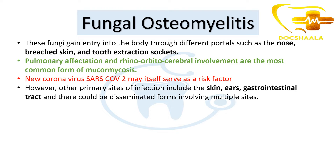How does this osteomyelitis occur? The fungal organisms — mucormycosis or aspergillosis — gain entry into the body through portals such as the nose, infected skin, or tooth extraction sockets. They then enter the maxilla or mandible in the maxillofacial region and start inhabiting that area. When that area is inhabited and the patient has any of the risk factors previously mentioned, there are chances of developing fungal osteomyelitis.